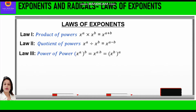The third law is power of power — that is x raised to power a, and whole raised to power b, is equal to x raised to power ab. That means we multiply the powers. The fourth law is power of product. That means when we have two numbers multiplied together and raised to power a, we distribute a between them: x into y raised to power a is equal to x raised to power a into y raised to power a.